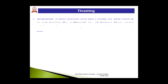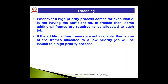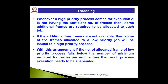The final topic of this lecture is thrashing. Whenever a high-priority process comes for execution without a sufficient number of frames, additional frames must be allocated. If free frames are not available, frames allocated to a low-priority job will be taken for the high-priority process. If the number of allocated frames of a low-priority process falls below the minimum required by the architecture, that process's execution must be suspended.